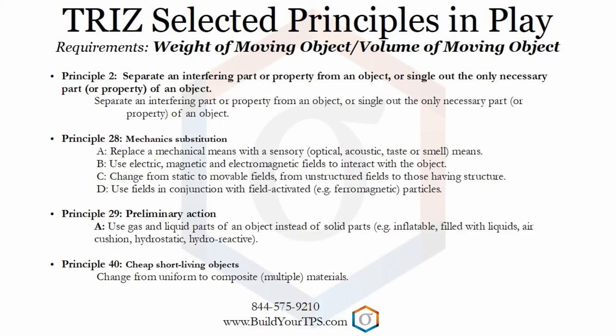First, we define the constraint — which in this example was increasing the weight of an object while maintaining a constant volume. This is defined as a contradiction in terms of problem solving: when one parameter is improved, another parameter worsens. Now we will investigate the four inventive principles that Genrich Altshuller determined applied to this contradiction problem.